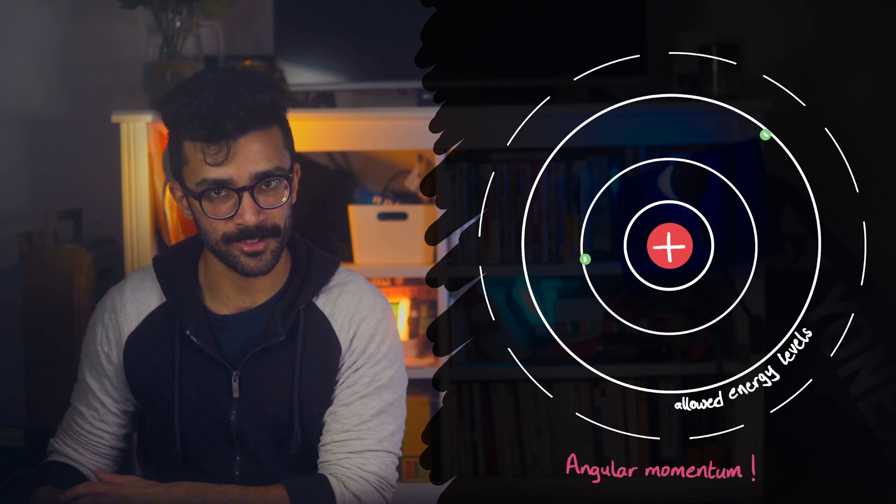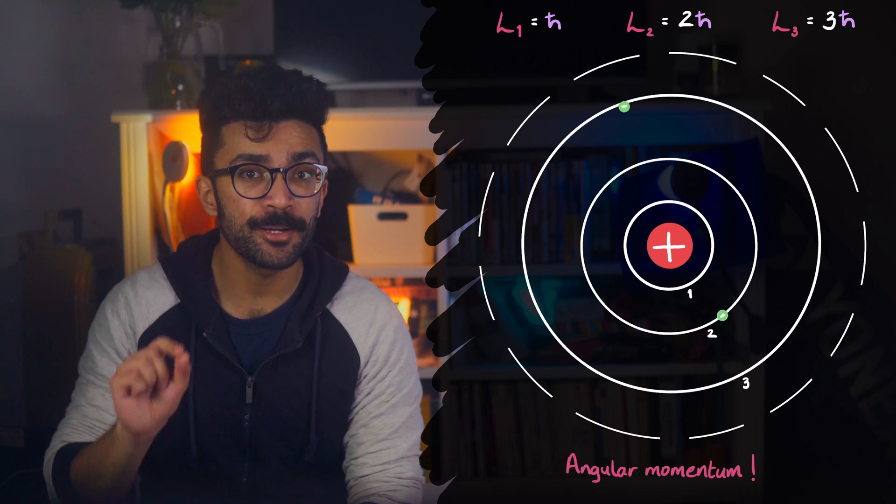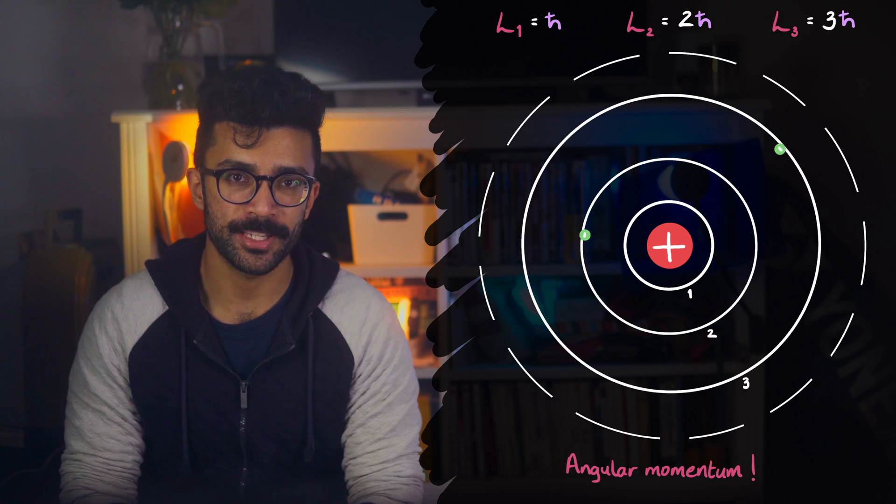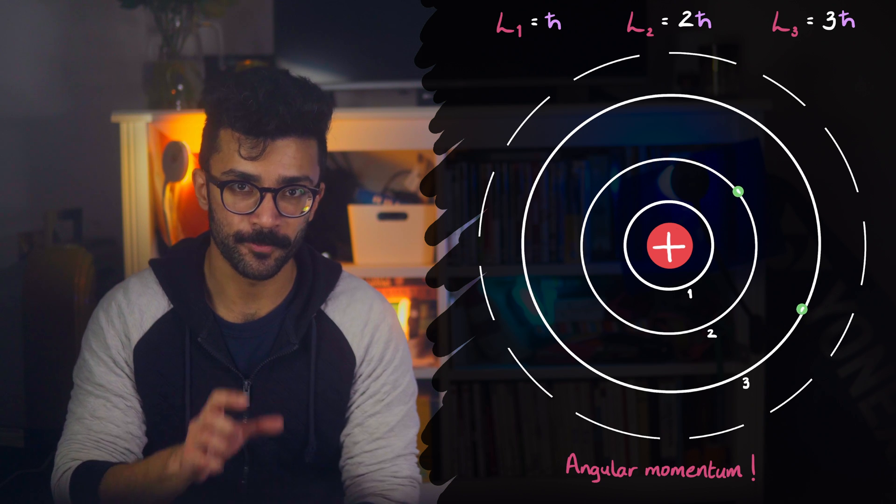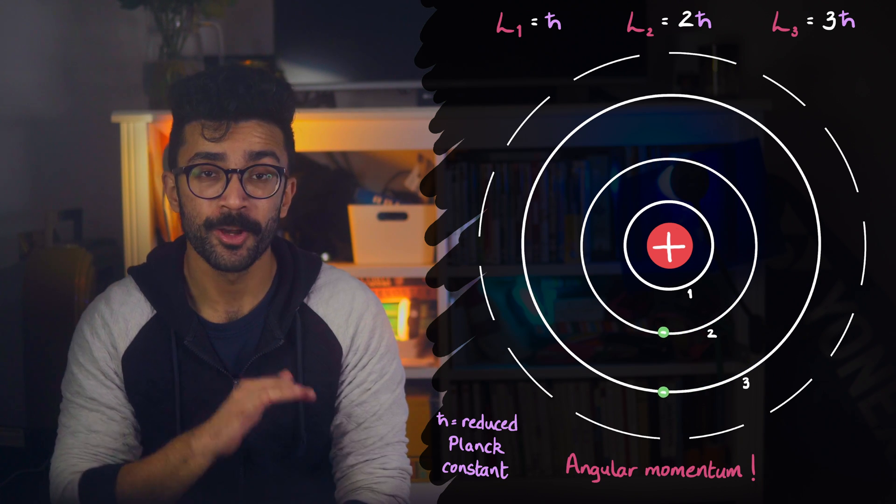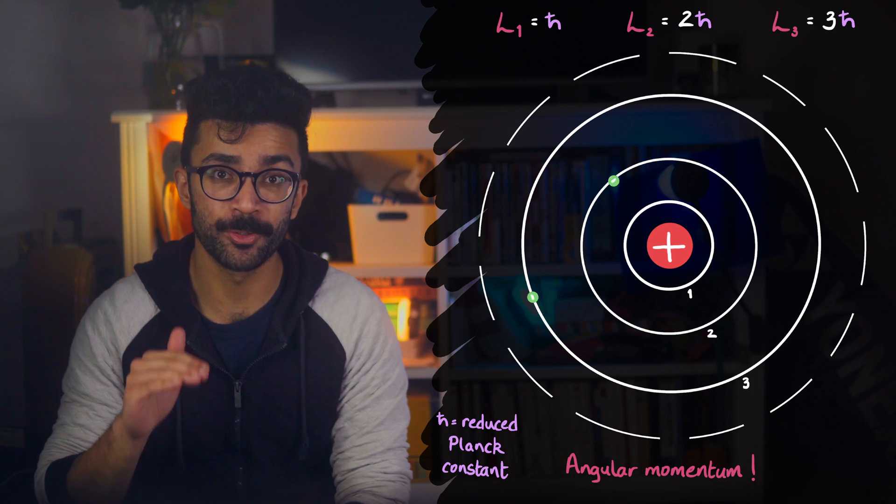they had a property called angular momentum. Any object moving along a curved path, or rotating, has angular momentum. It so happened that an electron's angular momentum in a particular energy level was equal to a multiple of the reduced Planck constant, one of the most important constants in quantum physics. It comes up everywhere.